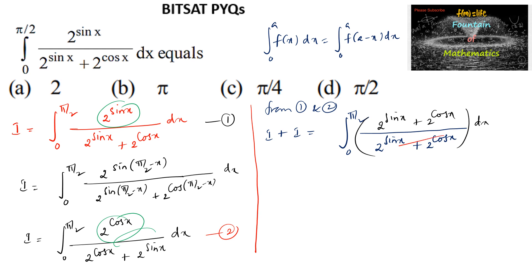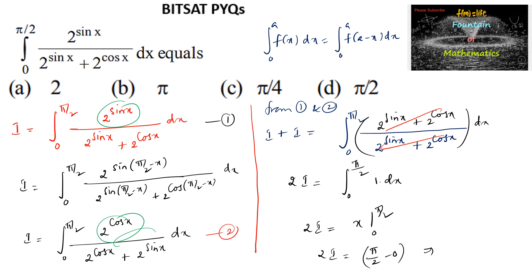Therefore 2I equals the integral from 0 to π/2 of 1 dx, which equals x evaluated from 0 to π/2. So 2I equals π/2 minus 0, giving I equals π/4. So π/4 is the answer, which is option C.